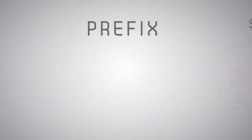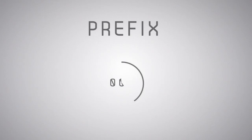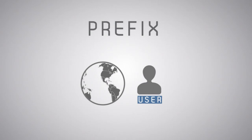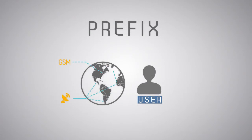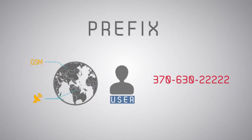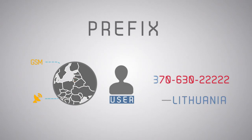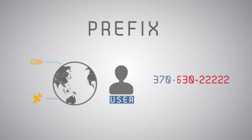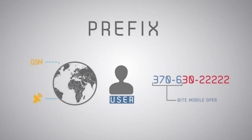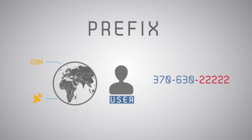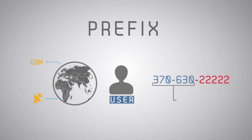A prefix is a number sequence that tells us the general location of the number owner — the country or city, and even the type of network the number is on, such as a mobile GSM or satellite network. For example, the prefix 370 shows that this number is from Lithuania; the prefix 370-6 shows the number is from the Beta mobile operator network; and the prefix 370-630 shows that this is a special prepaid service. As you can see, the number can be very informative.